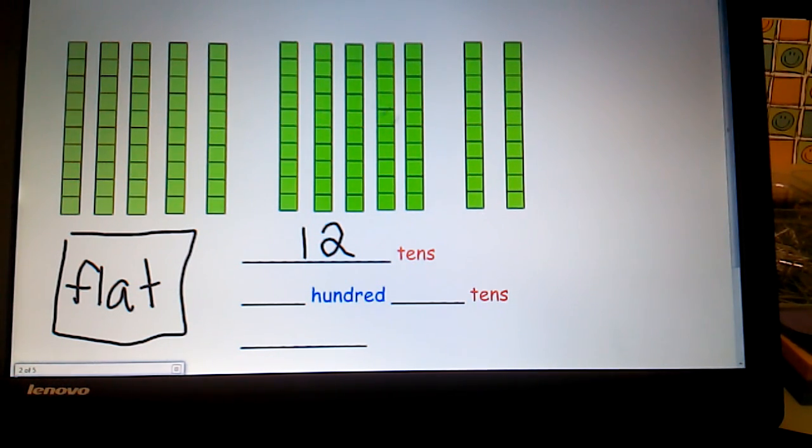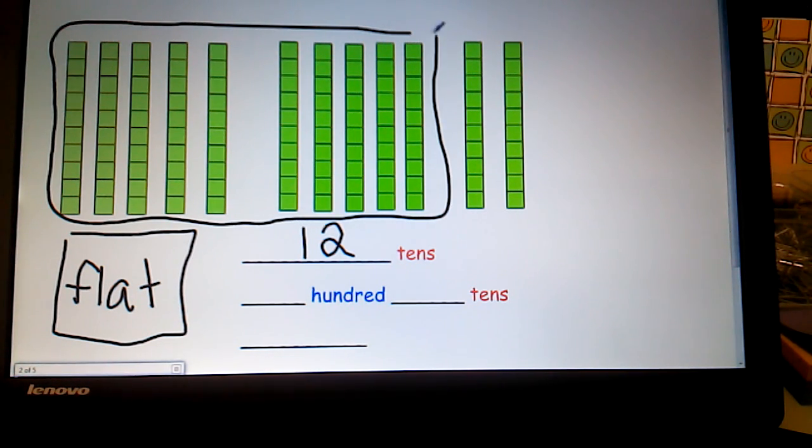They are asked to count out ten longs and circle them to make one hundred. How many tens are left over? Well, I can see that that is two.